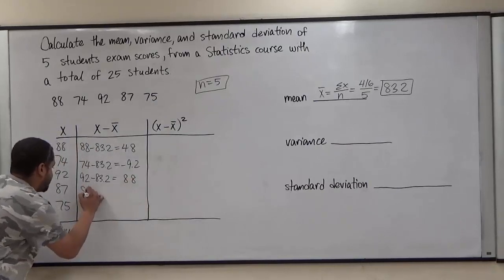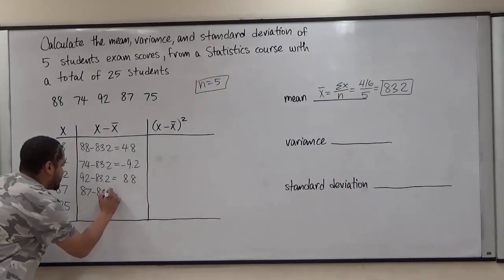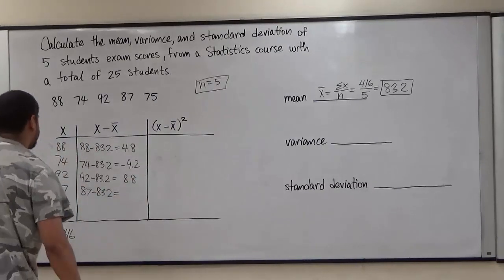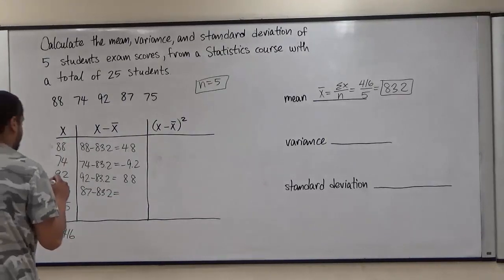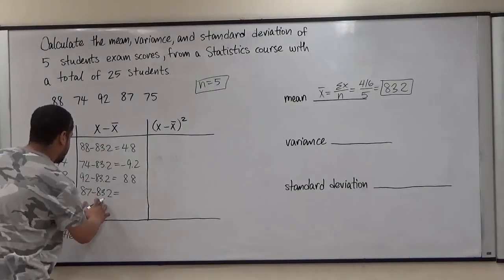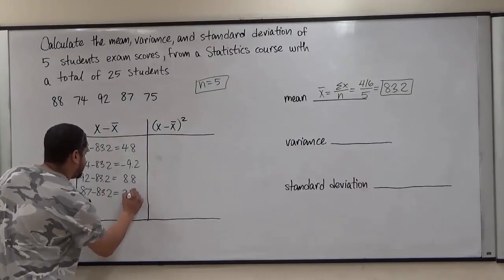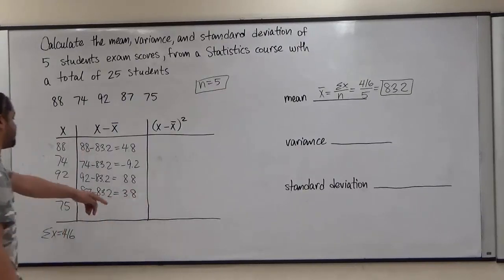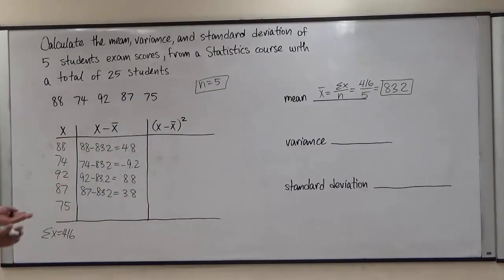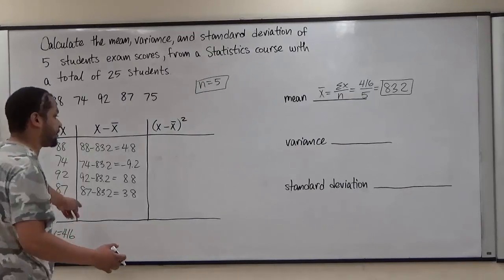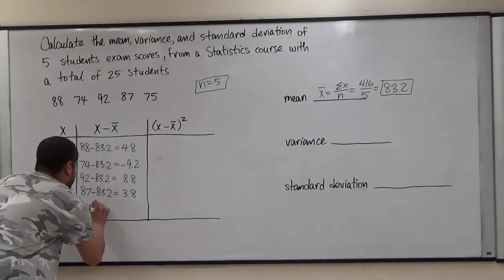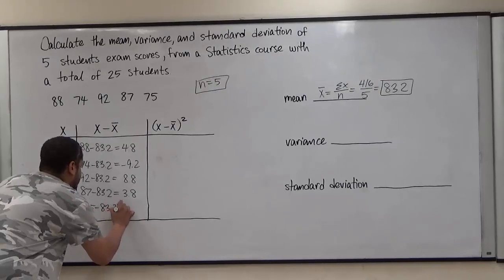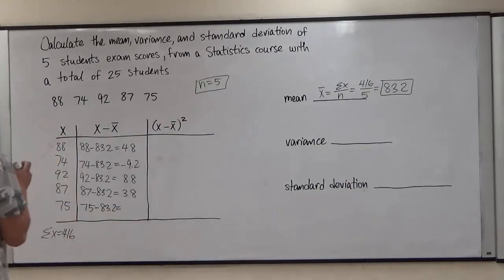Continuing the subtractions: 92 minus 83.2 results in 8.8. Then we have 87 minus 83.2 — and this is going to be 3.8. This is why it's important to keep a calculator handy; sometimes you may make a small mistake with the calculation. The last value is 75 minus 83.2, which results in negative 8.2.